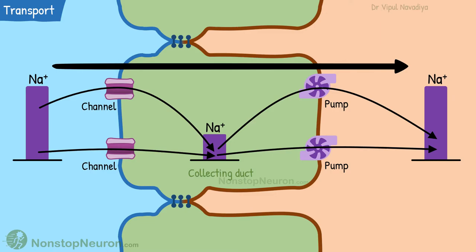In a nutshell, tight junctions prevent mixing of proteins on the two sides of the cell, which in turn allows net movement of a substance in the desired direction.